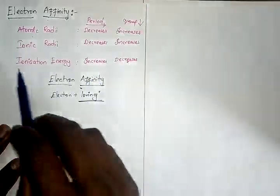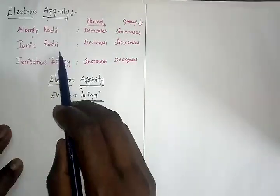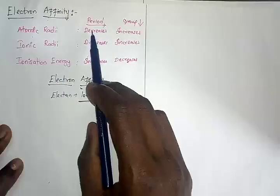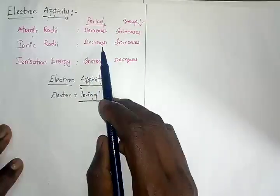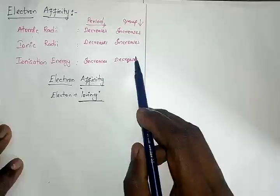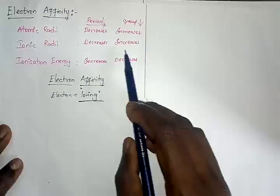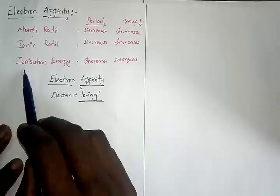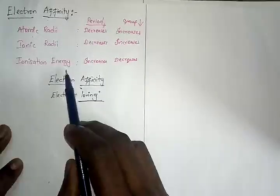Ionic radius has a similar trend compared to atomic radius. Across the period, the ionic radius decreases; along the group, the ionic radius increases for the same reason.